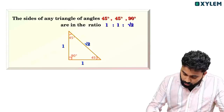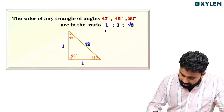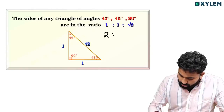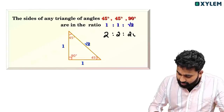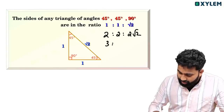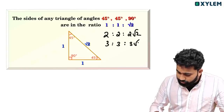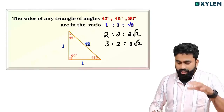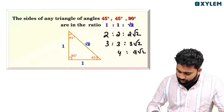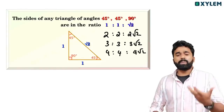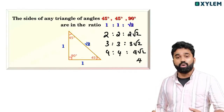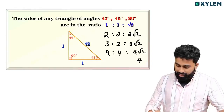The pattern extends: if the legs are 2, the hypotenuse is 2 root 2. If the legs are 3, the hypotenuse is 3 root 2. If the legs are 4, the hypotenuse is 4 root 2. This is A-plus level understanding.